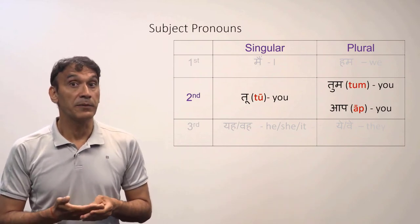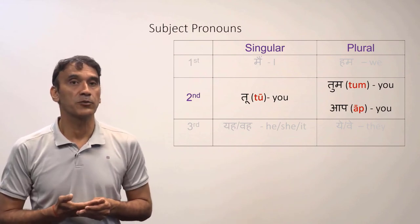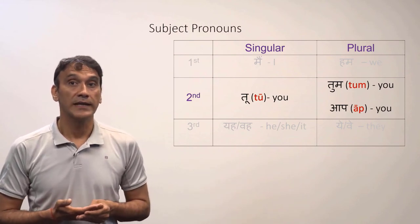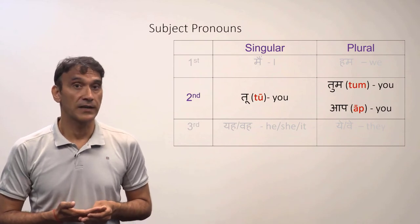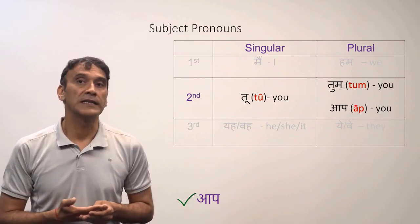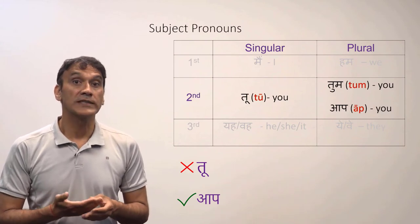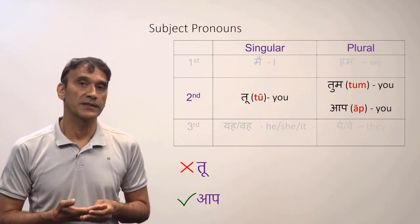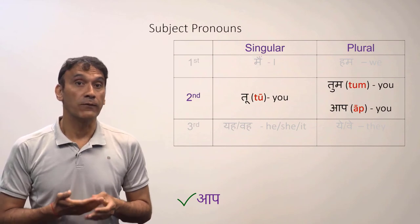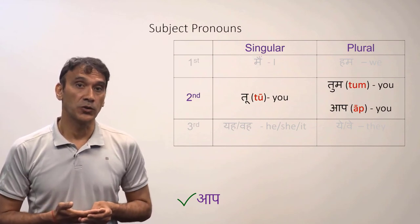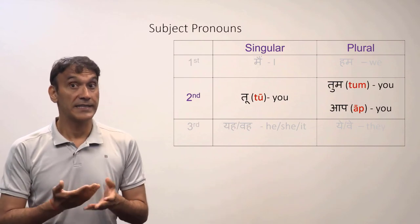Finally, 'aap' is also a second person plural subject pronoun meaning 'you' in English. It can be used for a singular person as well. It is the most formal and most polite way of addressing someone. Students are advised to use 'aap' most of the time. As you can see, English has only one second person subject pronoun — 'you' — while Hindi has three: 'tu,' 'tum,' and 'aap.'